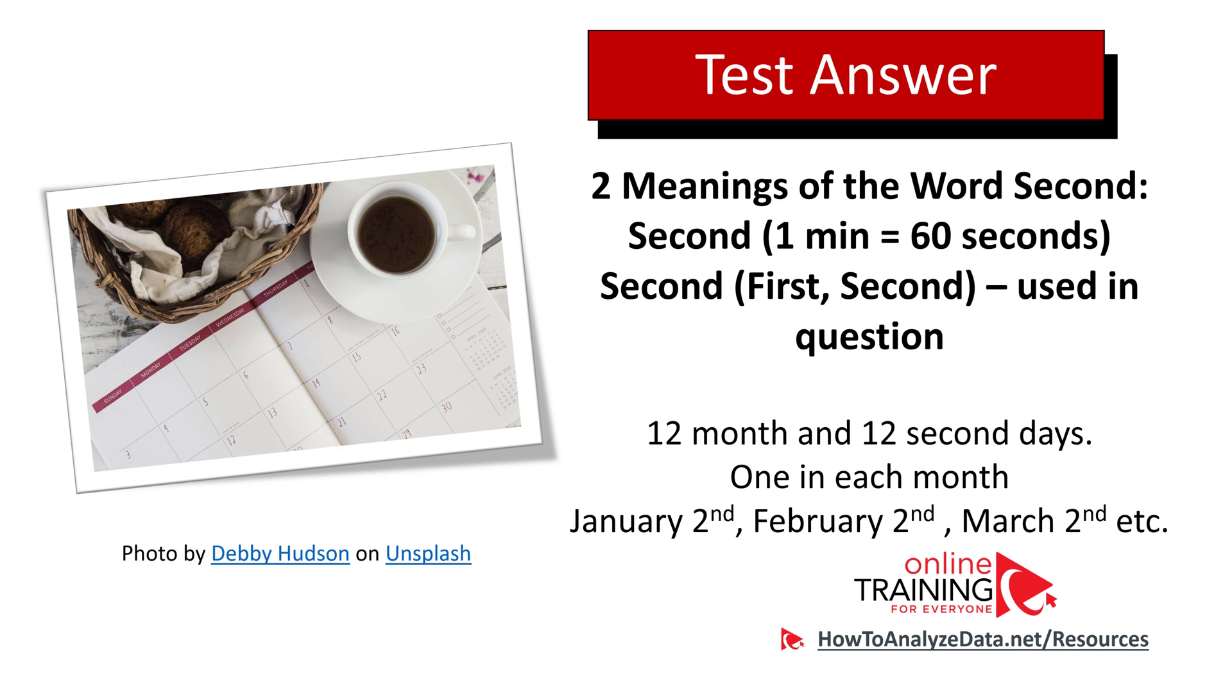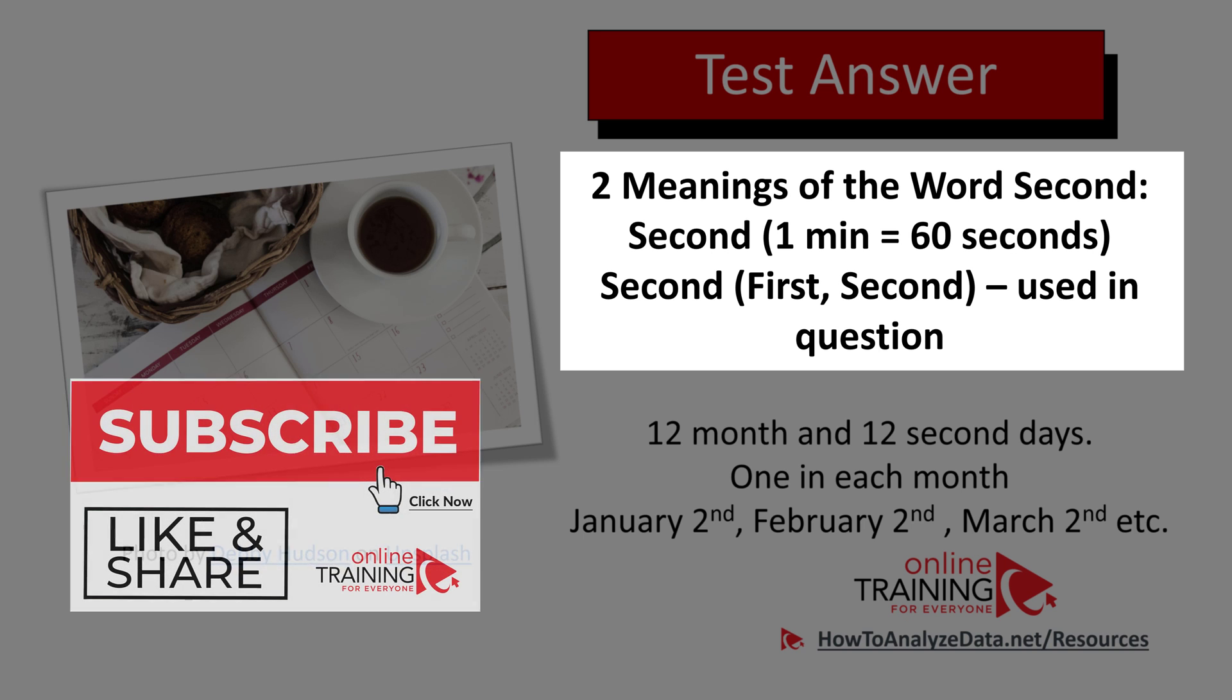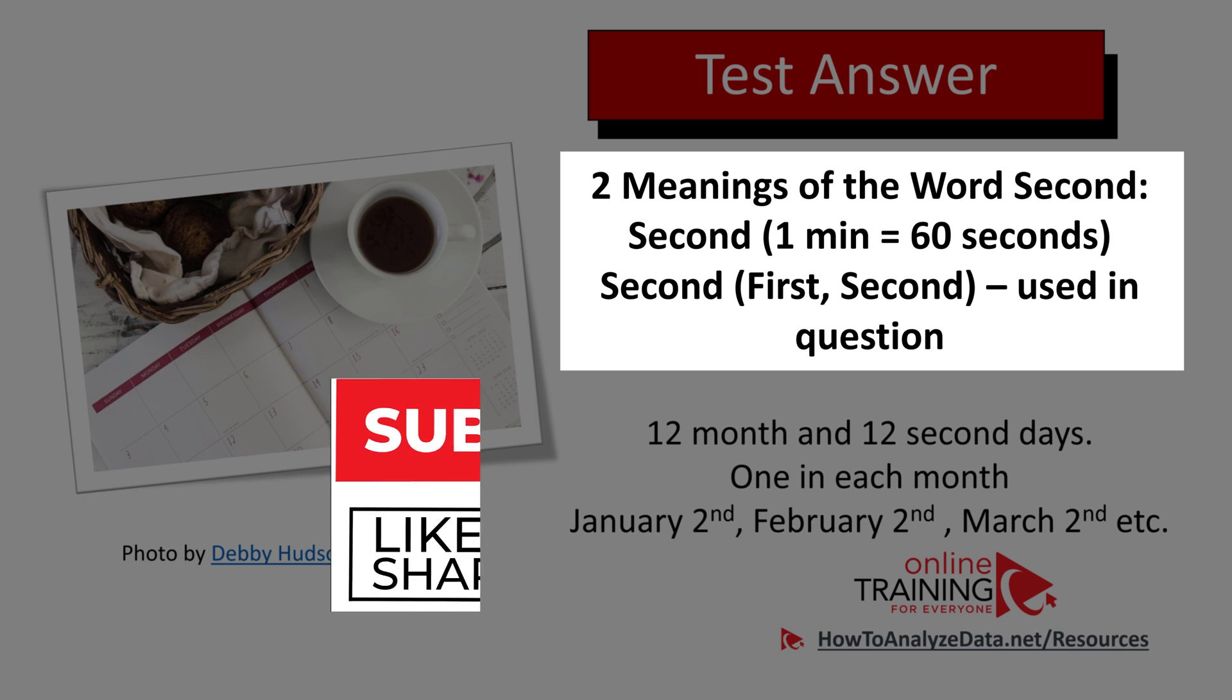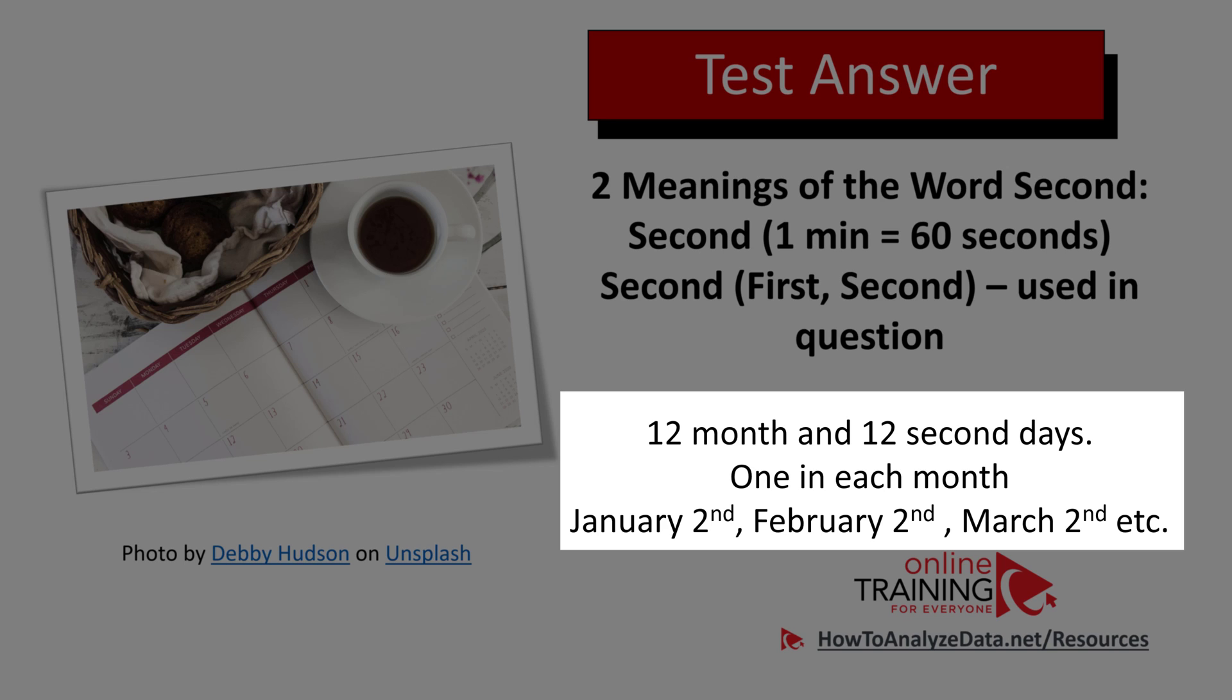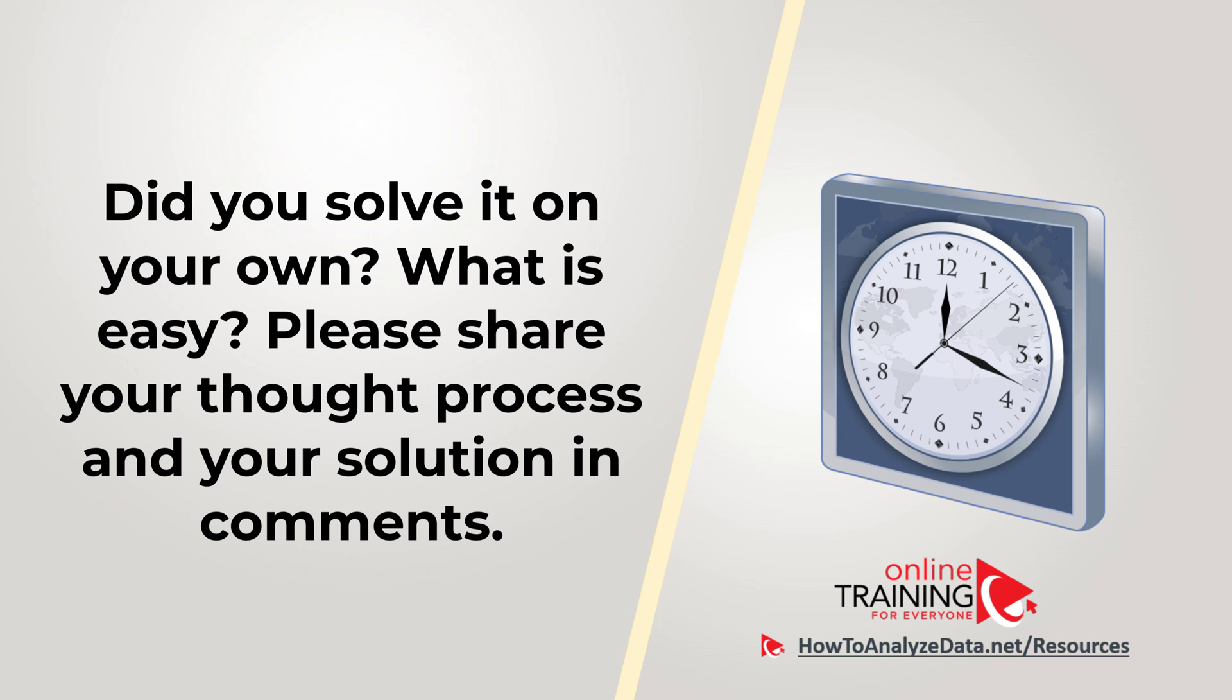Obviously this is a tricky question, and it challenges you in understanding of the word second. There are two meanings in the word second. One is second, for example, one minute has 60 seconds. But second one is second, where you have sequence of first and second. And the second meaning of the second is used in this particular question. So if we go back to the question, in the year there are 12 months, and there are 12 second days, one second day in each month: January 2nd, February 2nd, March 2nd, and etc. Hopefully you've nailed this question, it gives you some laugh, and you now know how to answer similar problems on the test.